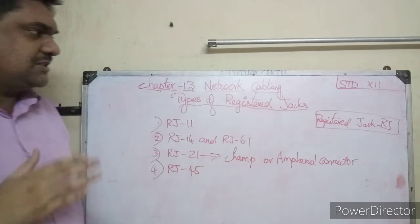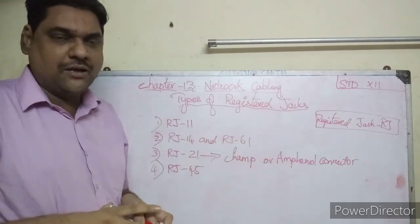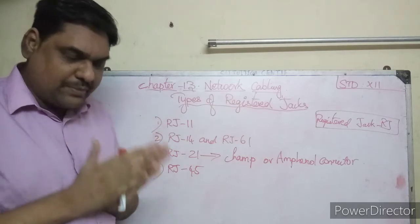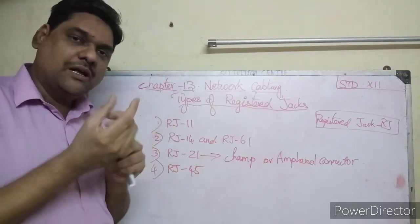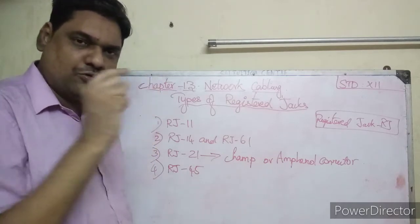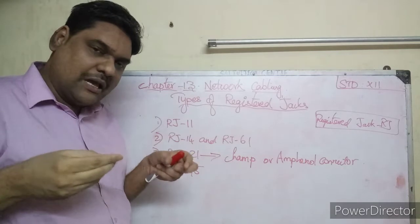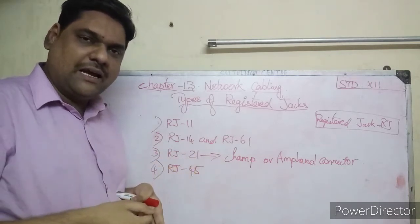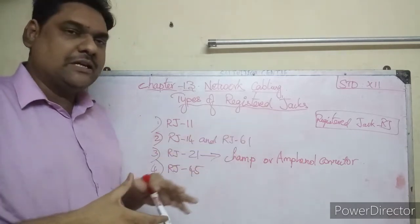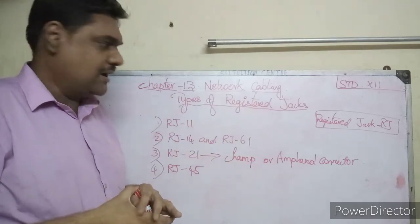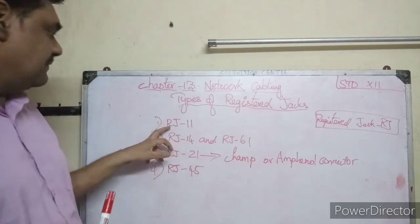RJ stands for Registered Jack. It is a standard used to define how a jack is manufactured. The jack is a small plastic, transparent connector where we can insert wires. There are several types of registered jacks.